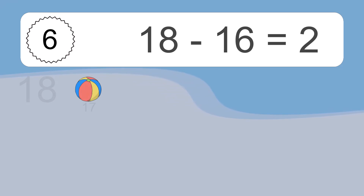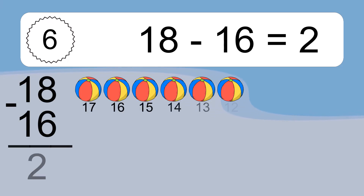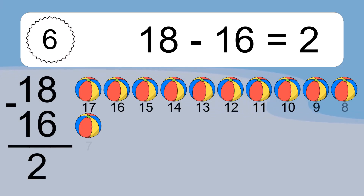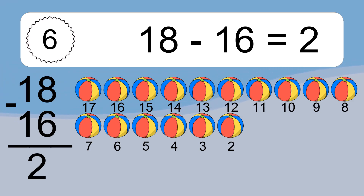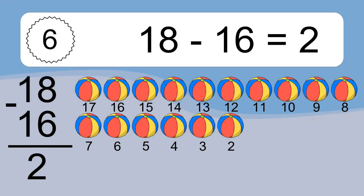18 minus 6 equals what? 18 minus 6 equals 12. Let's count it: 17, 16, 15, 14, 13, 12, 11, 10, 9, 8, 7, 6, 5, 4, 3, 2.